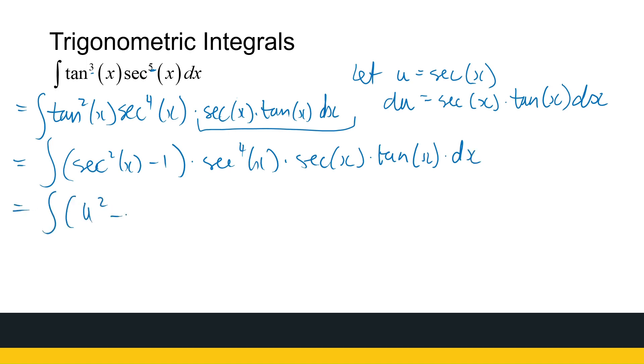Now I can substitute: (u² - 1) times u⁴ du. And as the previous one, here it becomes a simple polynomial: u⁶ minus u⁴ du, which gives us 1 over 7 u⁷ minus 1 over 5 u⁵ plus c. And then change it back to our original function: 1 over 7 sec⁷(x) minus 1 over 5 sec⁵(x) plus c.